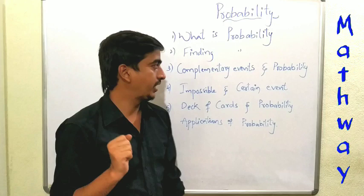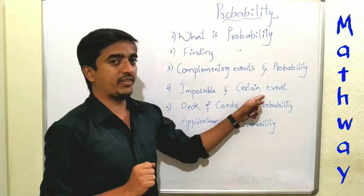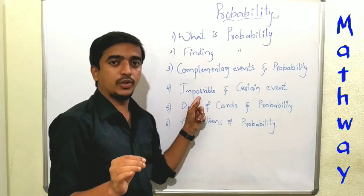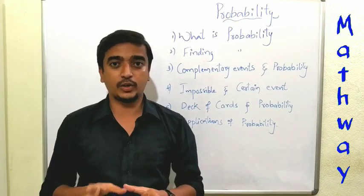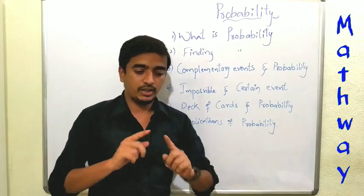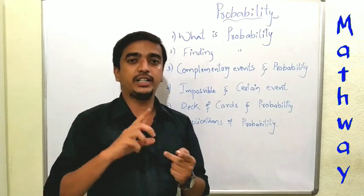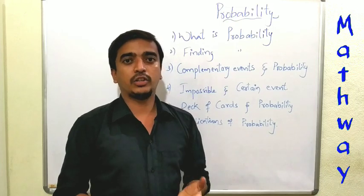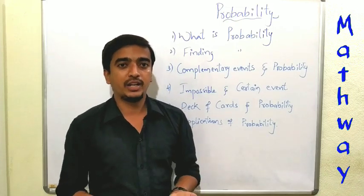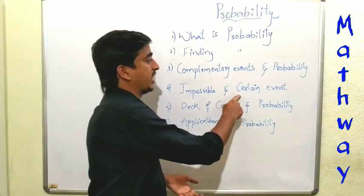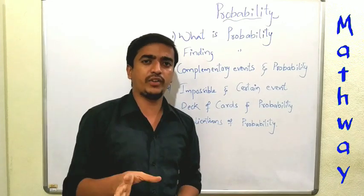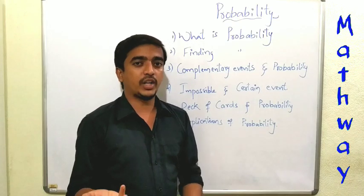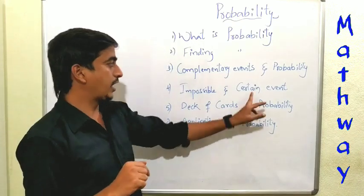Next, impossible and certain events. For example, I have a box with red, green, and yellow balls. If you want to get a white ball in that, it's impossible. Certain event is also a sure event - in this box, I have a red ball, so getting a colored ball is a sure event.